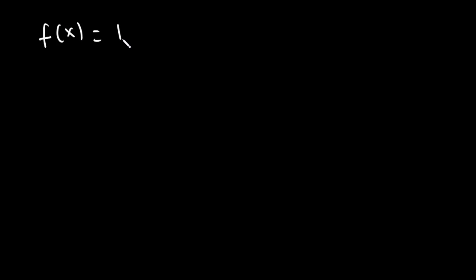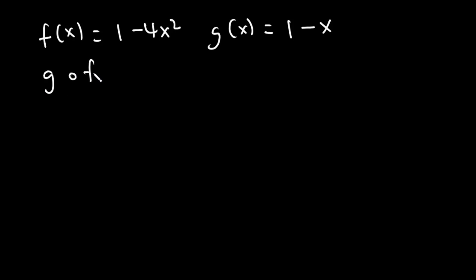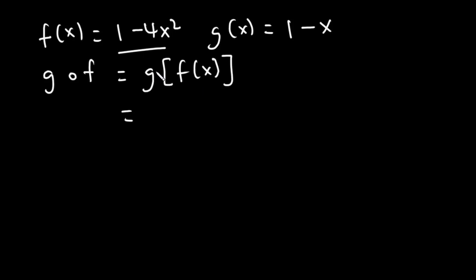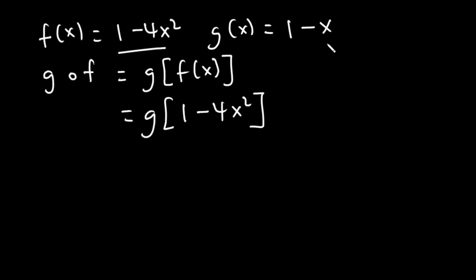Let's solve more examples. Given f(x) = 1 - 4x² and g(x) = 1 - x, let's find g of f. This time f is inside of g, so it's equivalent to g(f(x)). We replace f(x) with 1 - 4x², so it's g(1 - 4x²). Because 1 - 4x² is inside g, we replace x with 1 - 4x², giving us 1 - (1 - 4x²).